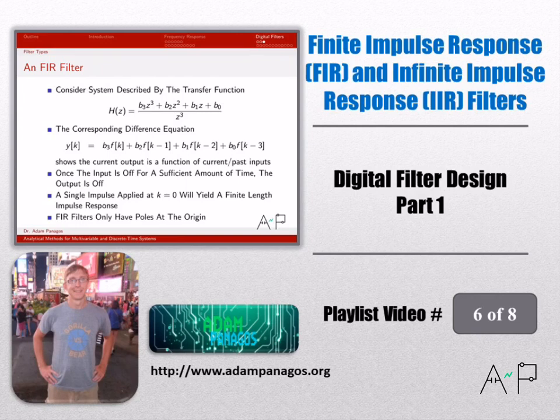In the last video, we looked at how given a transfer function of a discrete time linear system, you could approximately sketch the amplitude response or phase response of that system as a function of the pole and zero locations.